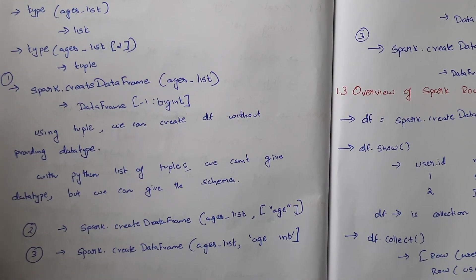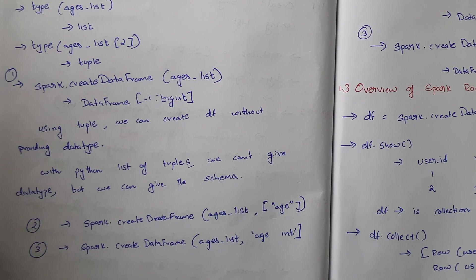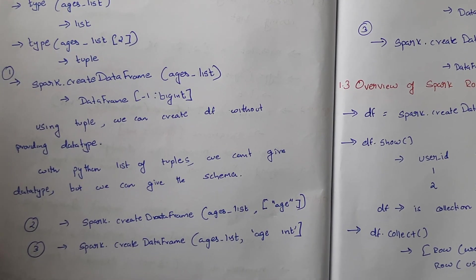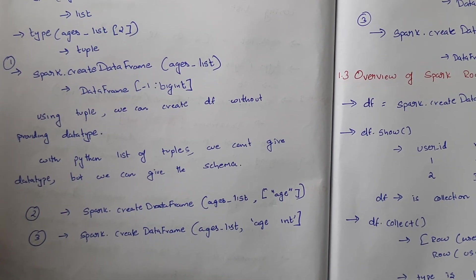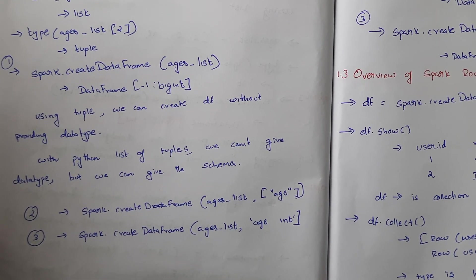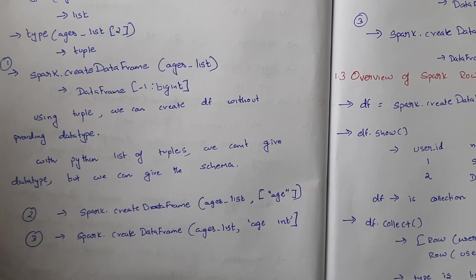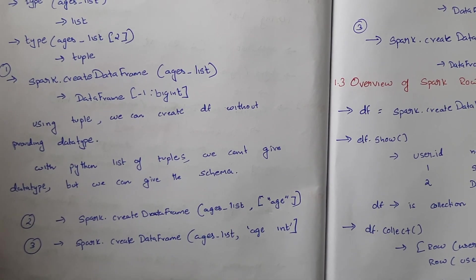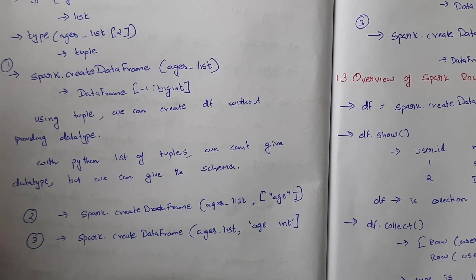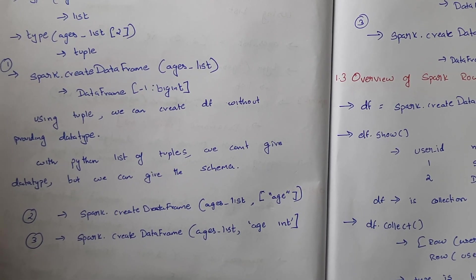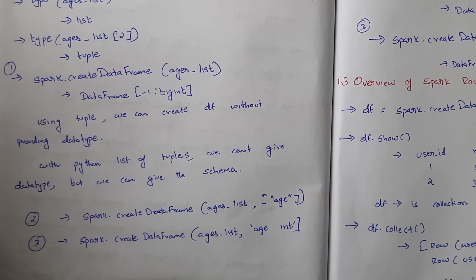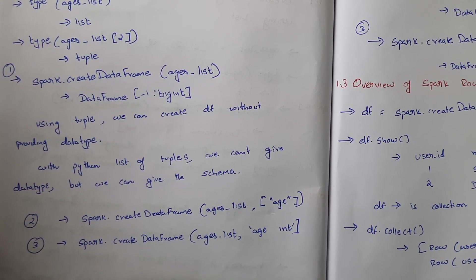With a Python list of tuples we can't give a data type directly, but we can give a schema. The second approach is: spark.createDataFrame(ages_list, schema=[...]) where we pass the column name like 'age'. If you don't provide a column name, a default column name like _1 or _0 will be generated.